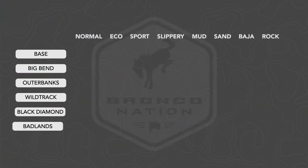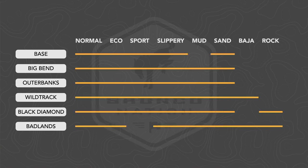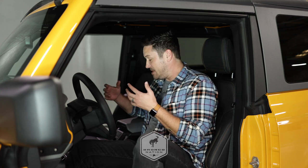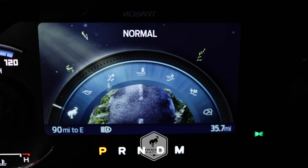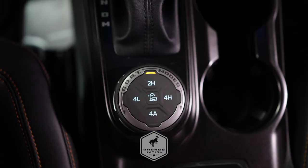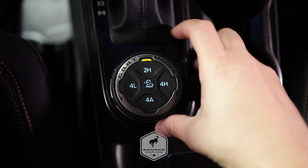Different GOAT modes are available based on the Bronco series. The GOAT modes we're covering in this video are for the Badlands Bronco. The default mode is normal mode — the default drive is four-high, but all of the four-wheel drive modes are selectable.